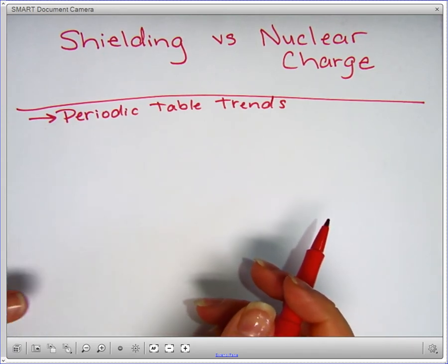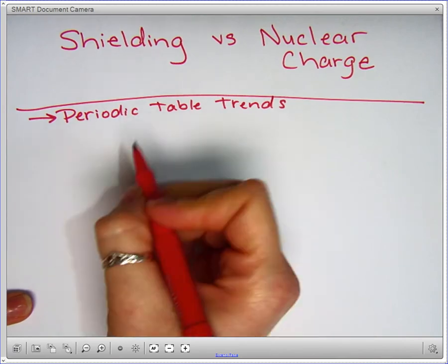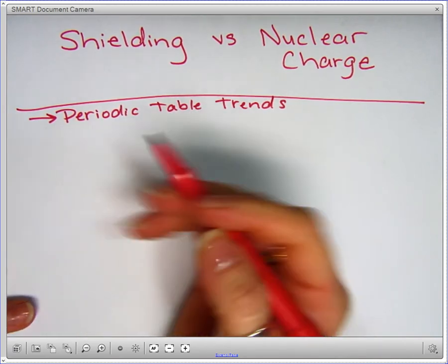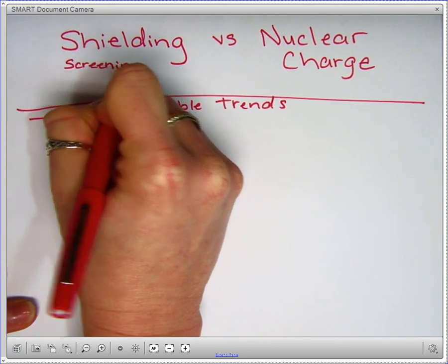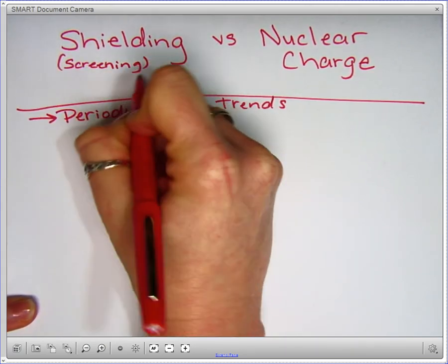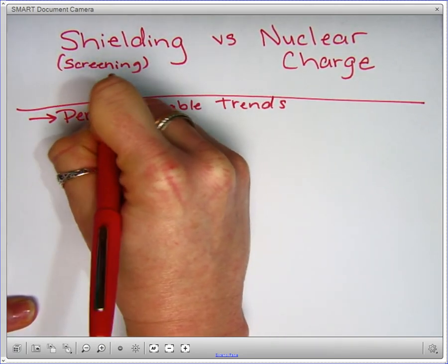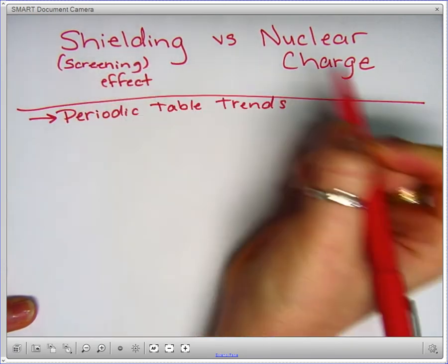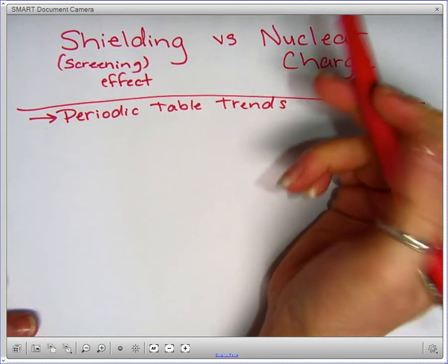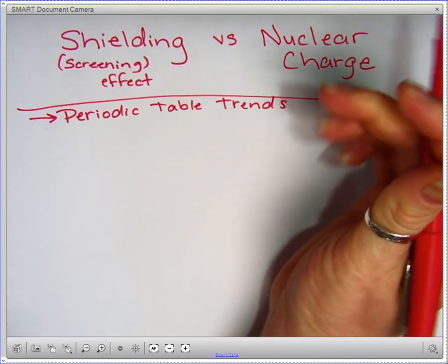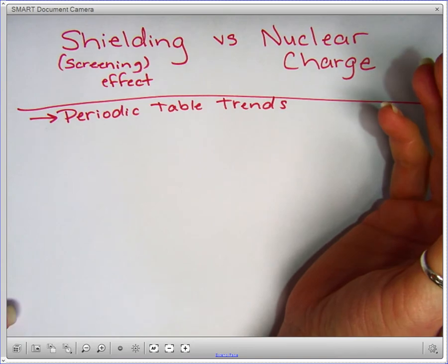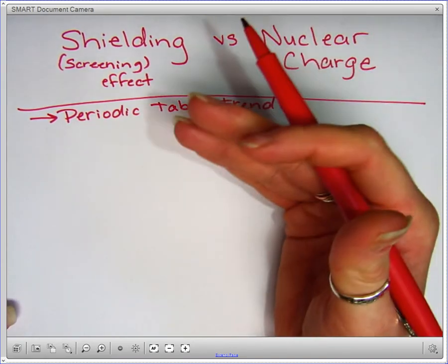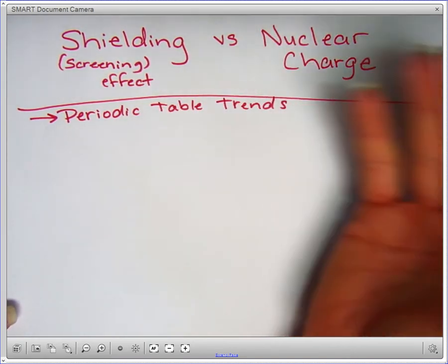So I'm going to start with shielding. Shielding or screening is also called the shielding or screening effect. Shielding is quite what it sounds like. When you think of shielding or screening, you think of stopping something or inhibiting something from being able to do its job or to get something done.